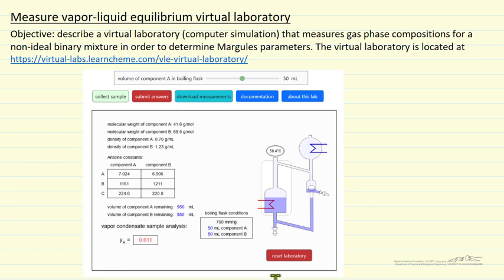I'm going to briefly describe a virtual laboratory that we created to measure vapor-liquid equilibrium for a binary mixture. The idea is we can fix the liquid composition at some value and then use the simulation to determine the vapor composition. We want to make a number of these measurements and then use nonlinear regression to determine the two parameters in a two-parameter Margules equation that best fit the data.